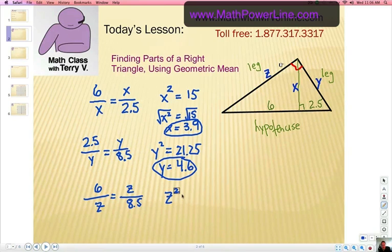So, cross-multiply, Z squared equals 51. Okay? You're going to grab your calculator and find the square root of 51, and Z then would be 7.141428, and so on. Let's call it 7.1. Okay? 7.1.